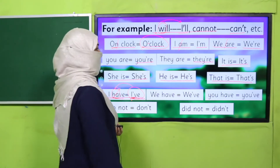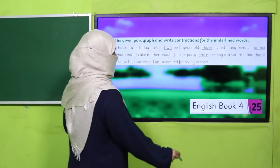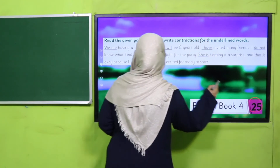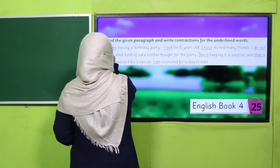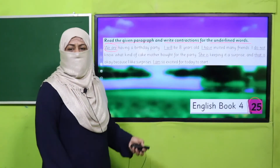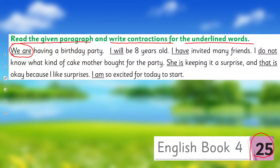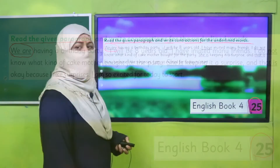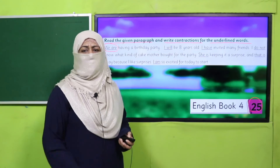We are going to practice contractions from your book on page 25. Read the given paragraph and write the contraction for the underlined words. The words are underlined for you — write each one in its shorter form. Pause the video and do this activity in your notebook. Are you done? Good job! You can also use contractions in your routine writing.